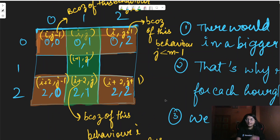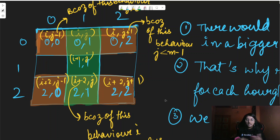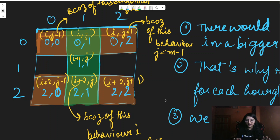This question is straightforward — the only critical thing is handling the edge cases well. You could pause this video and try coding it directly, then come back to check. The intuition explained so far is well enough for coding the solution.